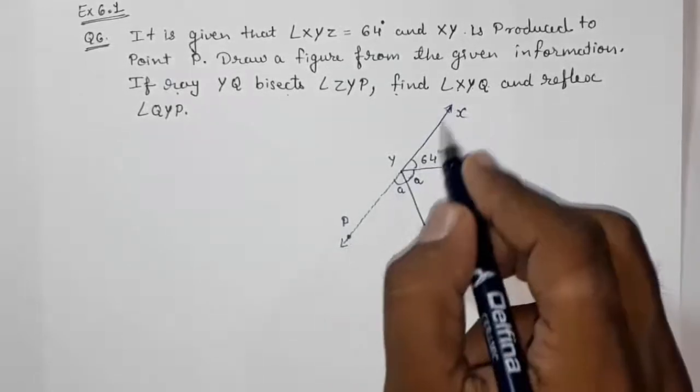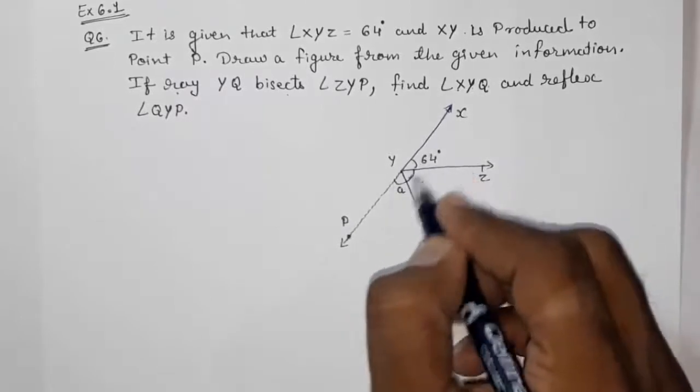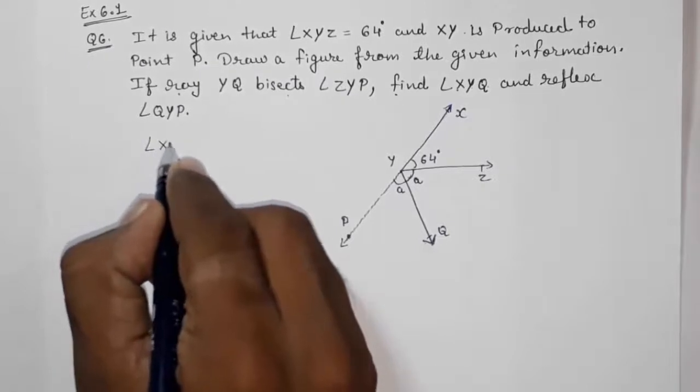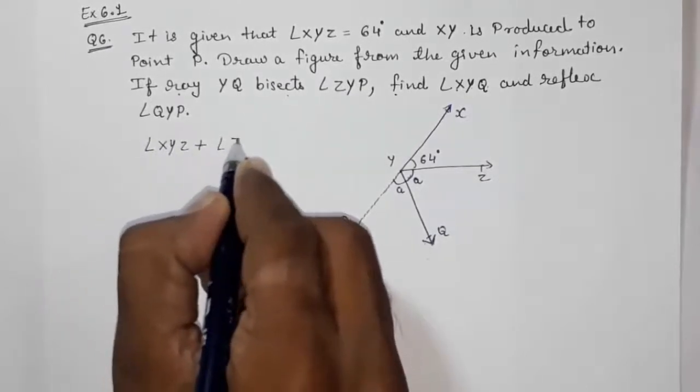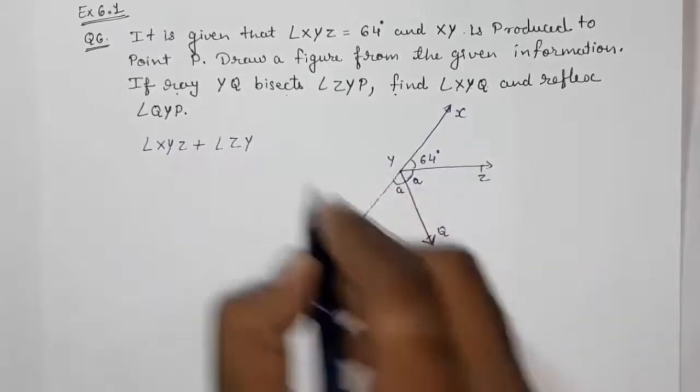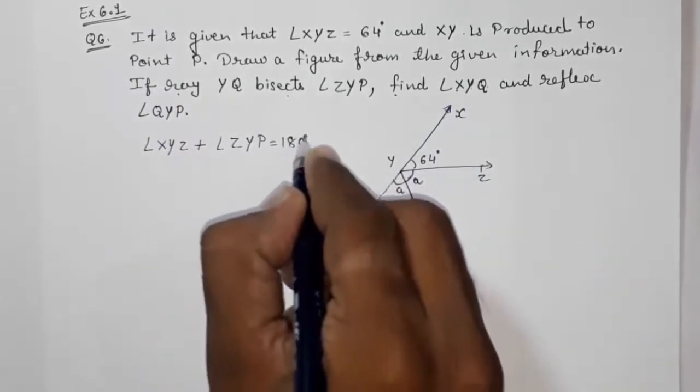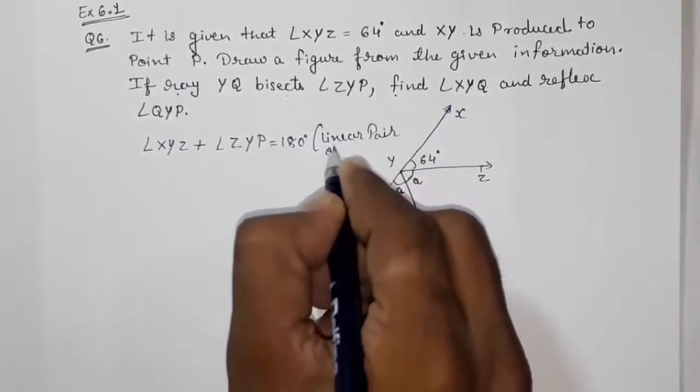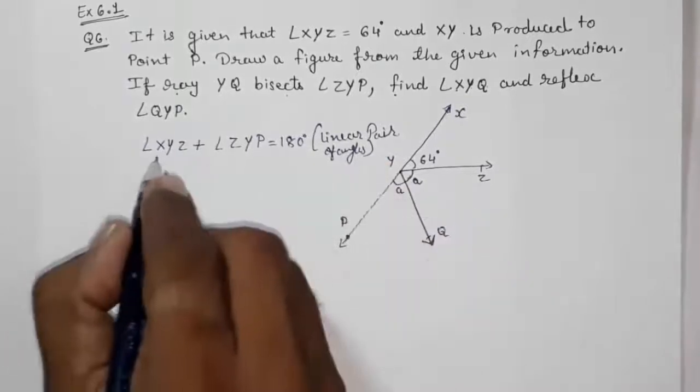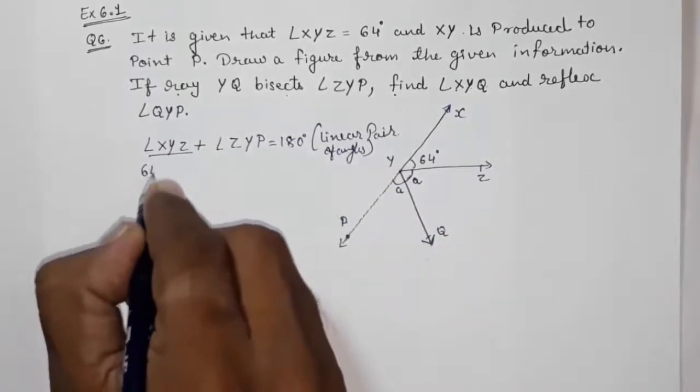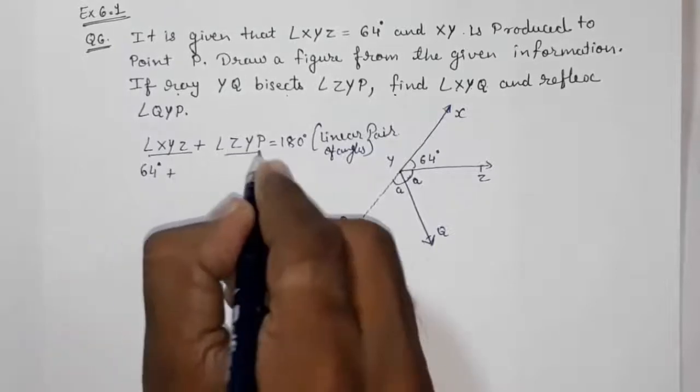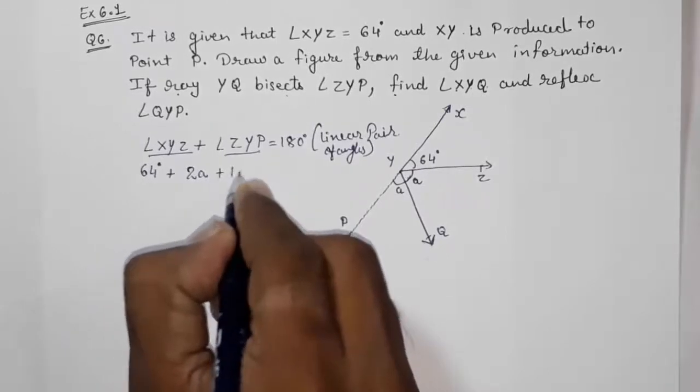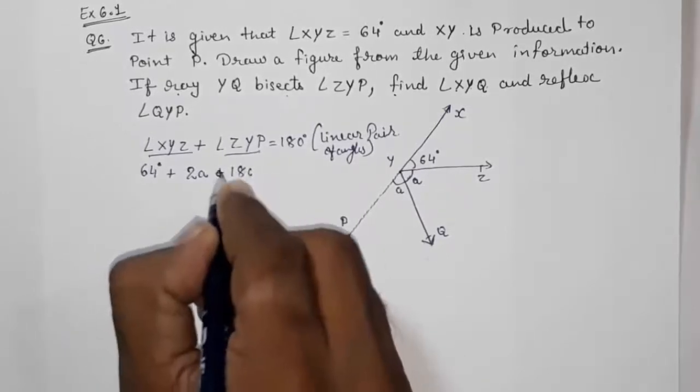Now you can see that XYP is a straight line. So sum of all these angles will be 180 degrees. So directly write down angle XYZ plus angle ZYP will be 180 degrees by linear pair of angles. So directly, XYZ that is 64 degrees plus ZYP means these two angles. So A plus A will become 2A equals 180 degrees.